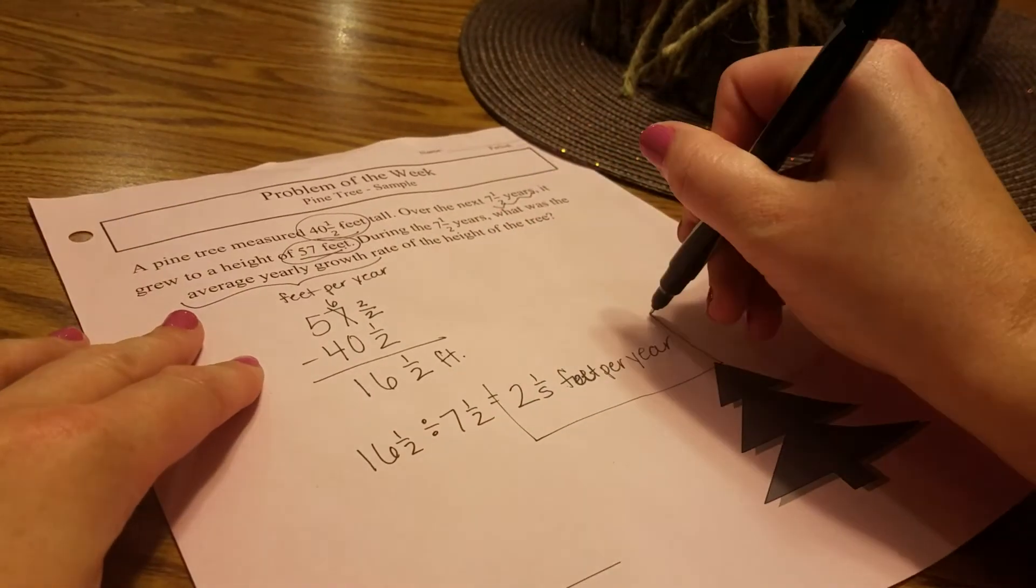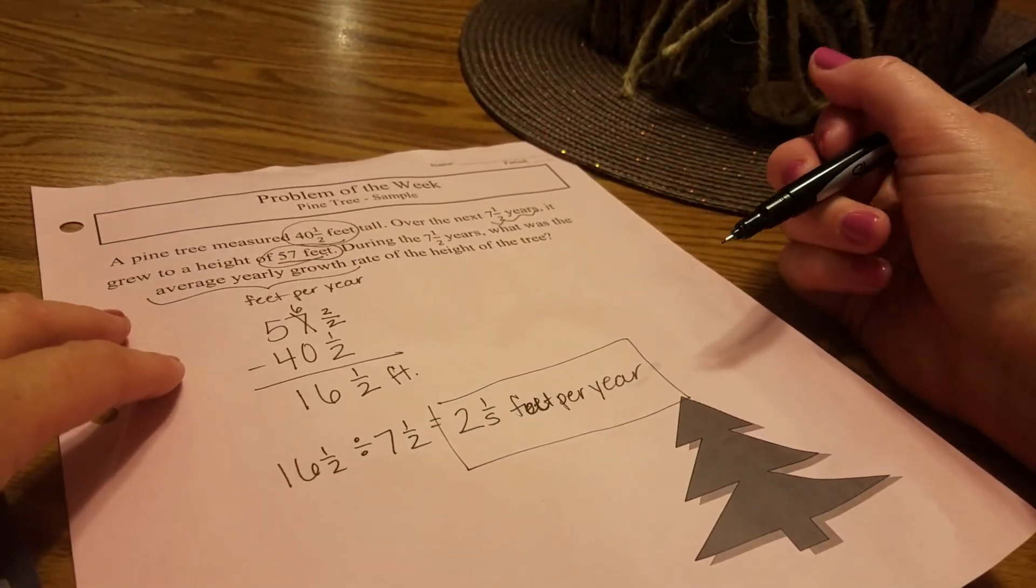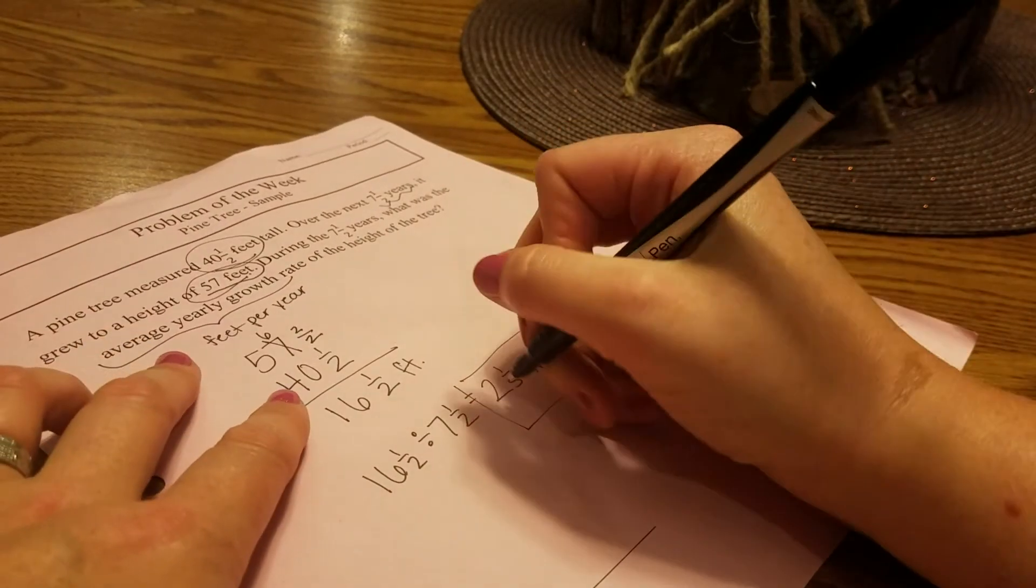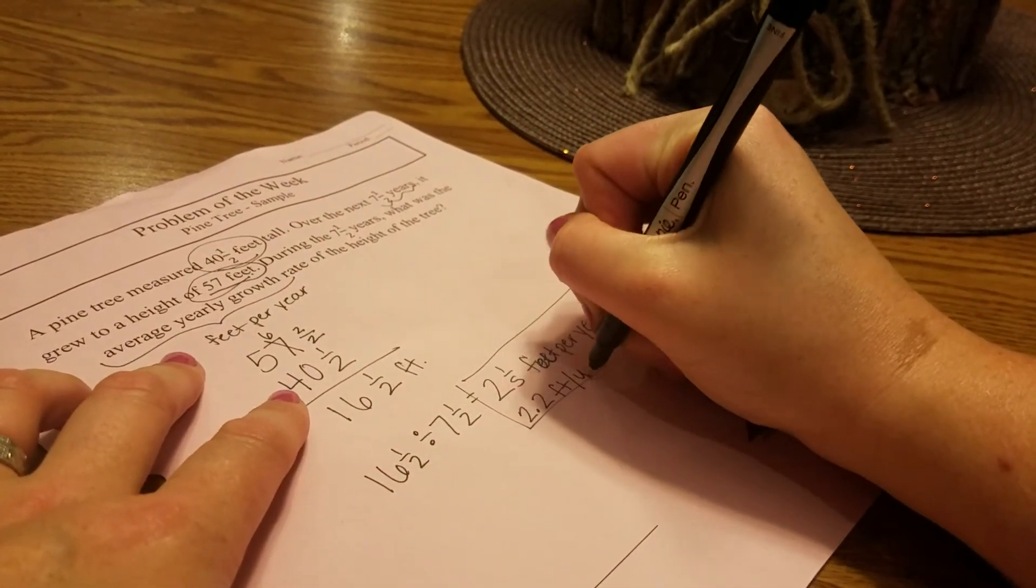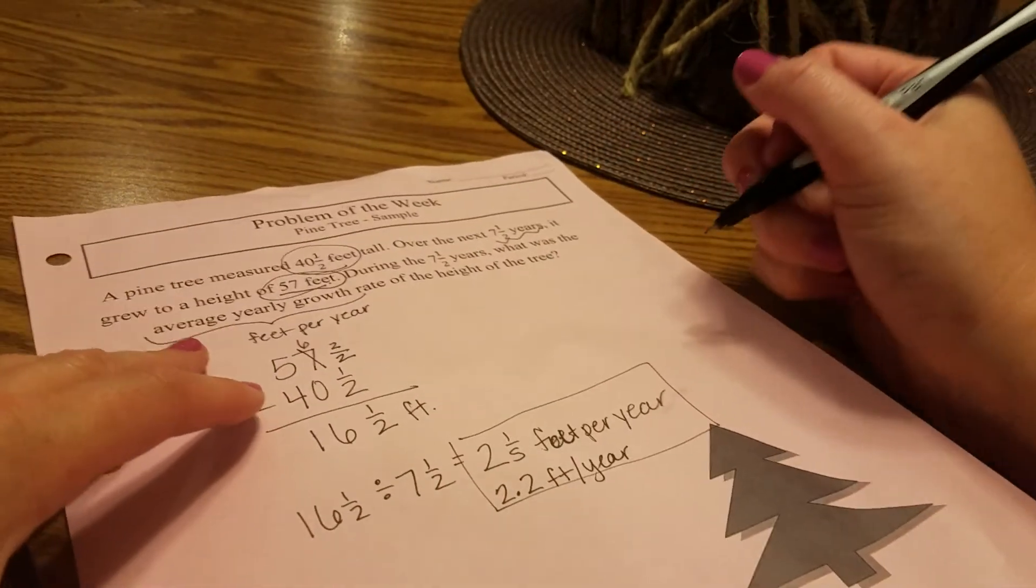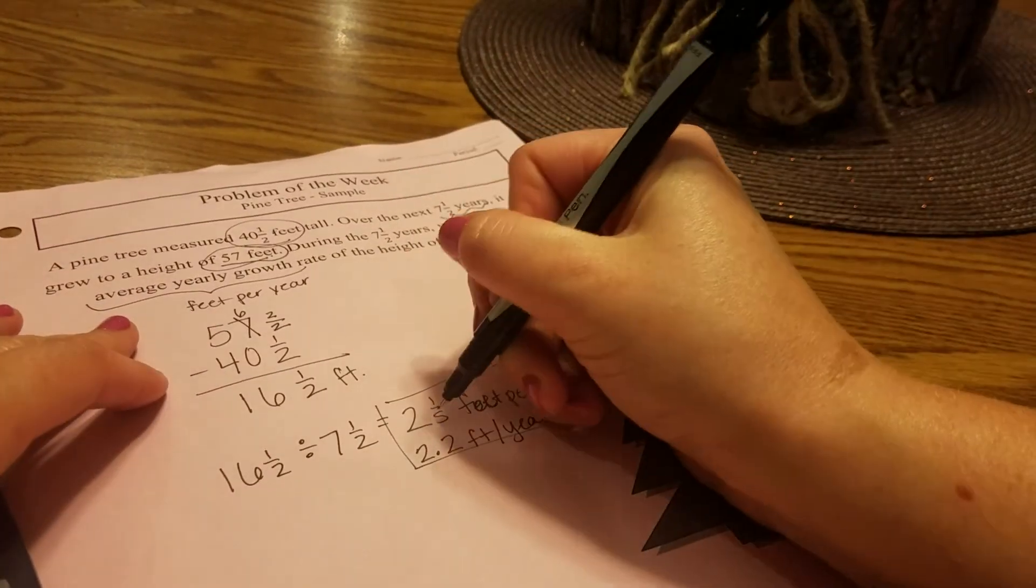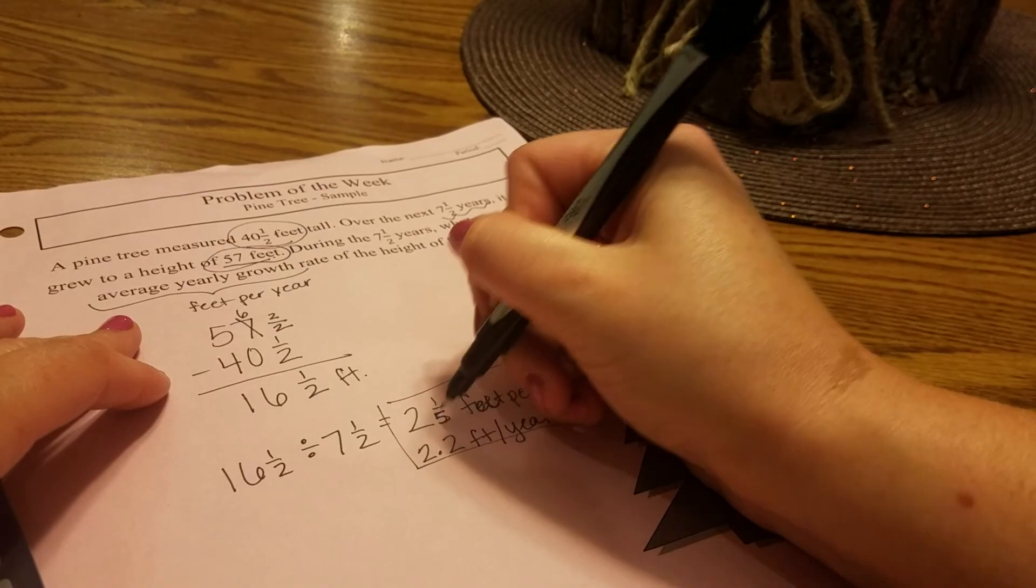Your average yearly growth rate for this tree is two and one-fifth feet per year. You could also change this if you wanted to be 2.2 feet per year because both of those are the same. One-fifth is the same as 2.2.